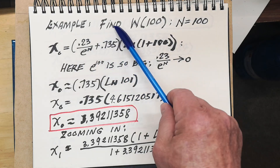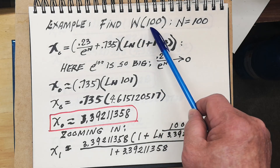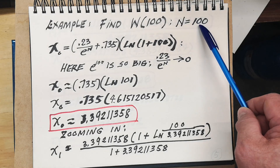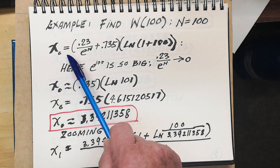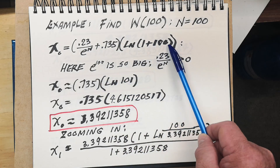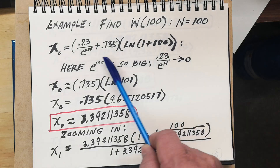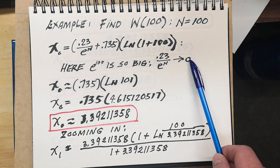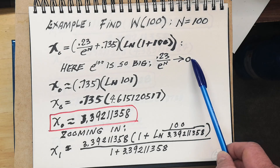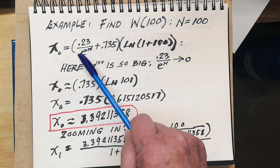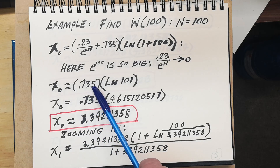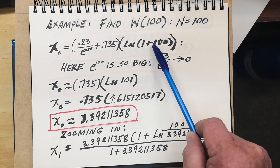The second example is to find W(100). That means n equals 100, so x times e to the x equals 100. To find the initial x₀: 0.23 divided by e to the 100, plus 0.735 multiplied by ln of (1 + 100). Here when n is 100, e to the 100 is a very large number, so 0.23 divided by that large number is almost zero, leaving 0.735 multiplied by ln of 101.